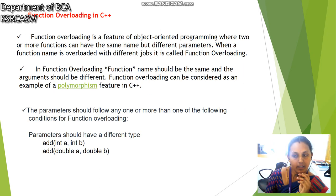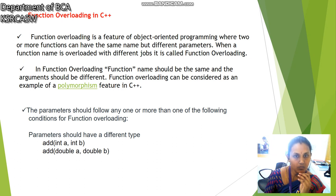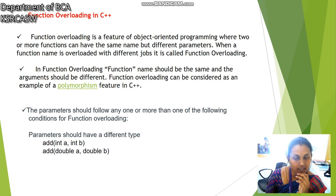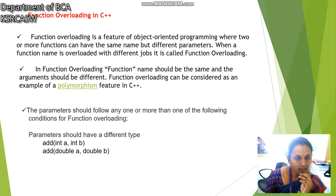Function overloading in C++: when the same function name is used but the parameter list is different, that is called function overloading. In function overloading, the function name should be the same and the parameters should be different. That is considered an example of polymorphism. For example, one function has parameters int A and int B, and another function has double A and double B — the data type is different. This is called function overloading.